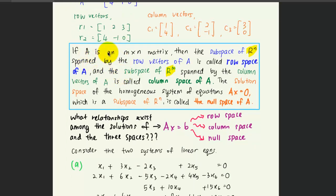If matrix A is an m by n matrix, then the subspace of Rn spanned by the row vectors of A is called the row space of A. And the subspace of Rm, where m is the number of rows, spanned by the column vectors of A is called the column space of A.